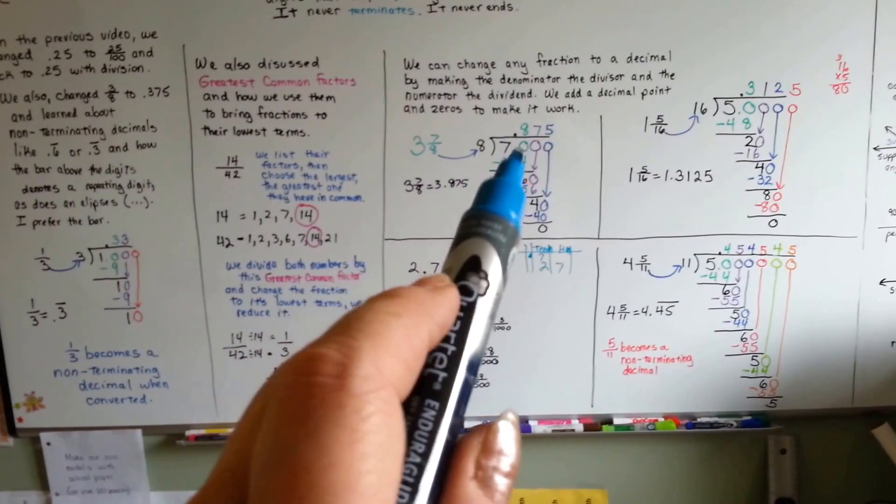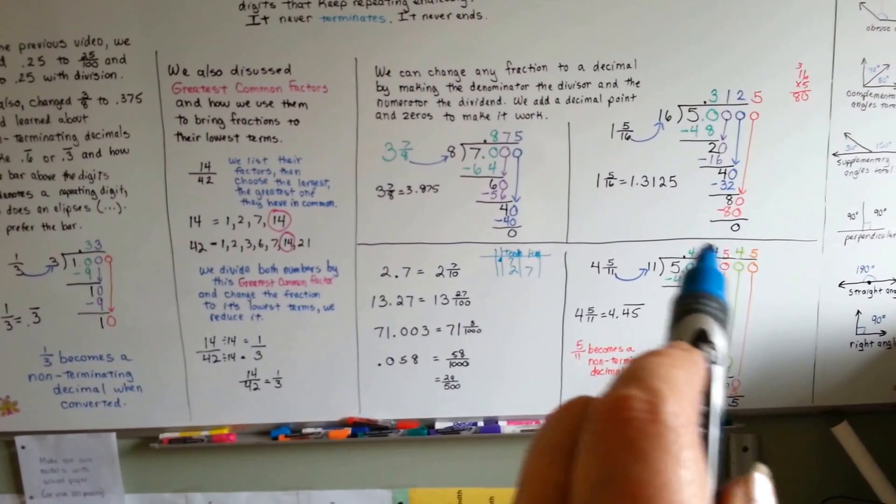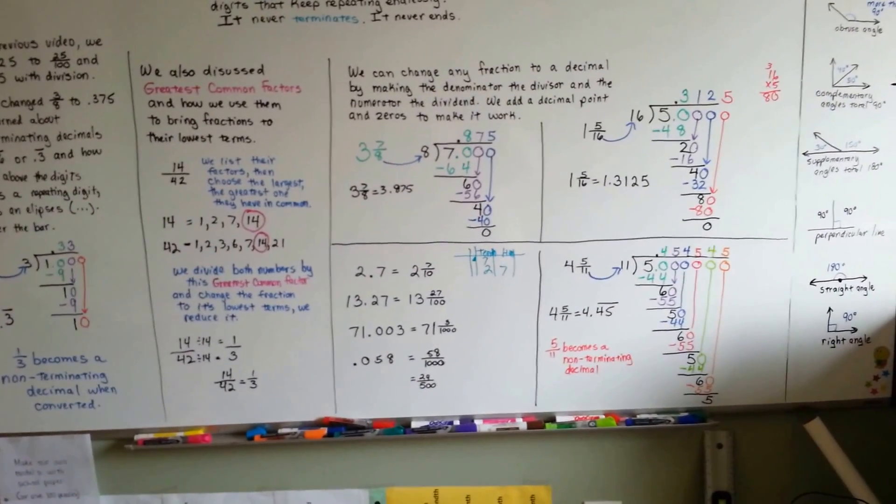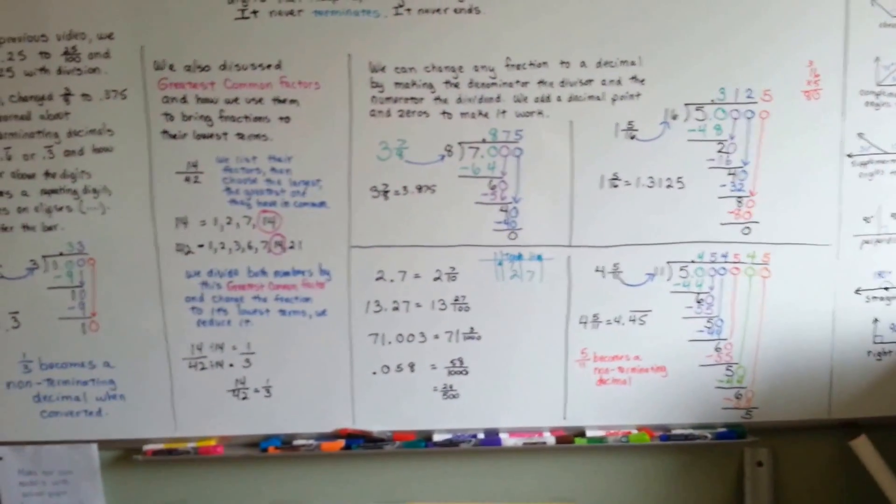But don't let it scare you. Just keep adding the zeros. And if it starts repeating, catch yourself, you don't have to do it three times. Once it does it two full times, it's going to do it again. So we could have stopped right there and said, okay, we already see it's repeating.